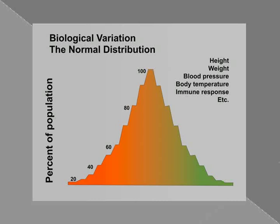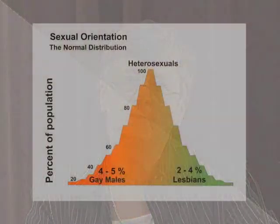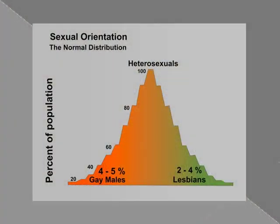So we're not all alike — we vary. What I'm going to suggest to you today is that sexual orientation is one of those biological characteristics in which there is variance in the population, and that it falls under the same kind of normal distribution that every other biological characteristic falls under.